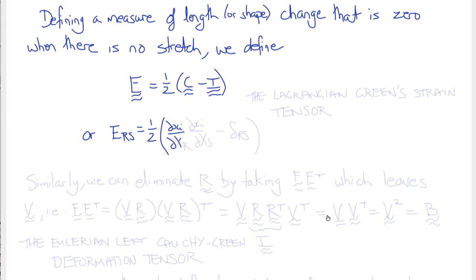You can see why we've subtracted I from C to get a tensor that's zero when there's no strain or shape change. The factor of one-half comes from the fact that this expression is squared. The Lagrangian Green's strain tensor measures length squared change rather than length change, which comes about from Pythagoras.